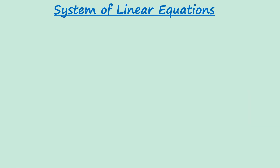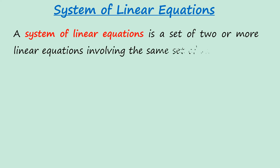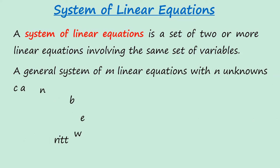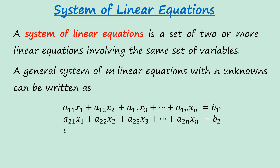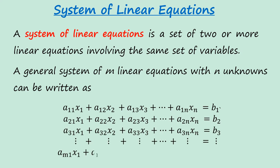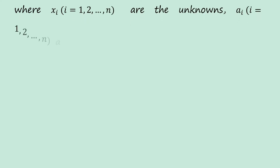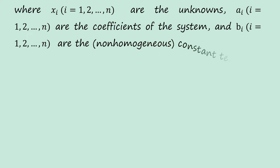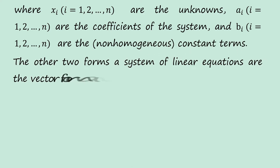Let us now give the definition of systems of linear equations. A system of linear equations is a set of two or more linear equations involving the same set of variables. In a general system of linear equations with n unknowns, Xi are the unknowns, Aij are the coefficients of the system, and Bi are the non-homogeneous constant terms.